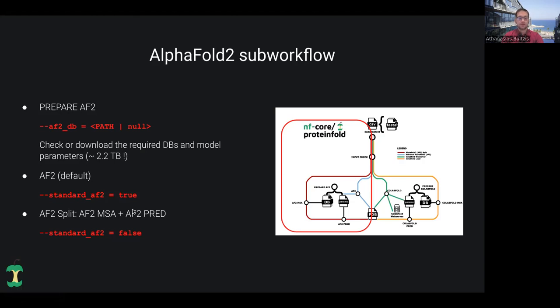If you think about it, this is quite convenient, for example, in cloud infrastructures, because this step, the AF2 prediction step, requires GPU. So if you run everything in the default mode on GPUs, it's much more computationally expensive. It costs much more than the AF2 split. You can specify these two modes using the standard_AF2 parameter here. True for the default AlphaFold and false for the AlphaFold split.